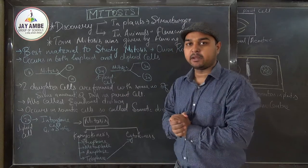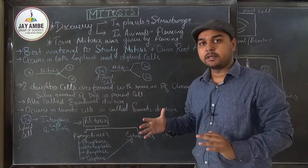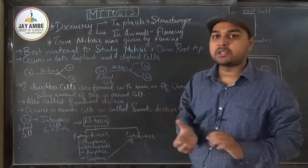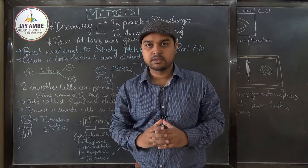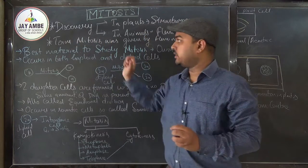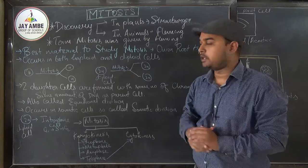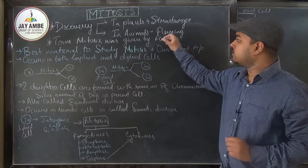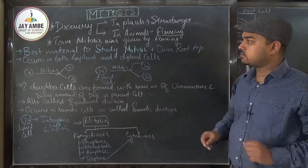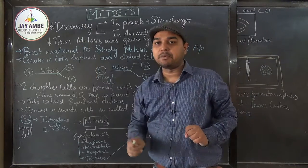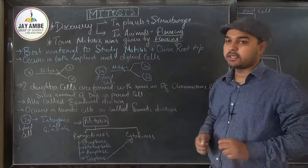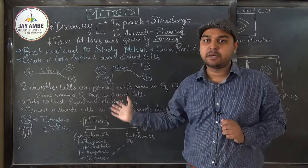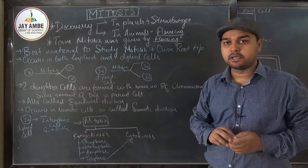Today we are going to start the topic of mitosis type of cell division. This is a very important topic. The meaning of mitosis is 'thread-like structure.' Its discovery in plants was first made by Strasburger, and in animals it was first discovered by Fleming. The term 'meiosis' was also given by Alexander Fleming.